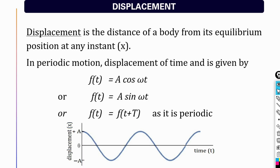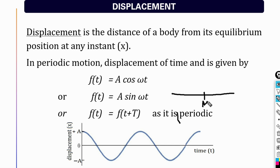First let us consider what is displacement. Displacement is the distance of an object from its equilibrium or mean position at any instant. Here we have one particle performing straight line to-and-fro motion, centered about the mean position or equilibrium position.